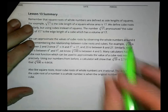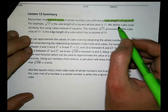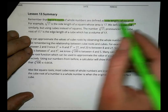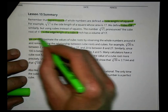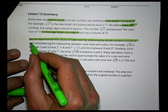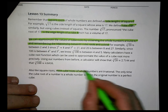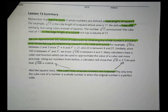In summary: remember that square roots of whole numbers are defined as side lengths of squares. We define cube roots similarly — the cube root is the edge length of a cube. The big thing here is that we can approximate the values of cube roots by observing the whole numbers around it and remembering the relationship between cube roots and cubes. Most cube roots of whole numbers are irrational, meaning they're not simple numbers that stop — they end up being repeating decimals that go on for a long time.